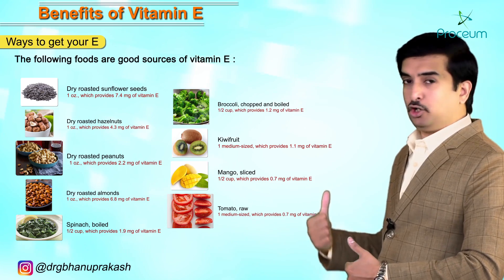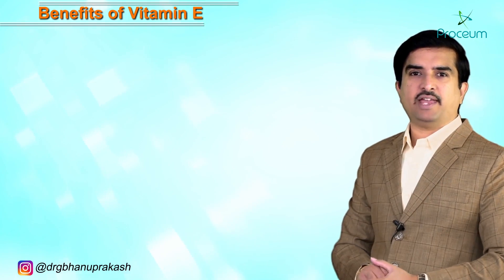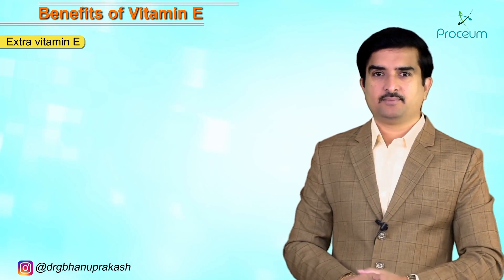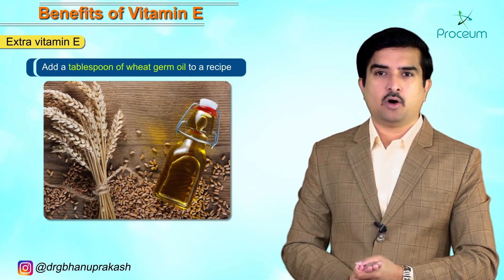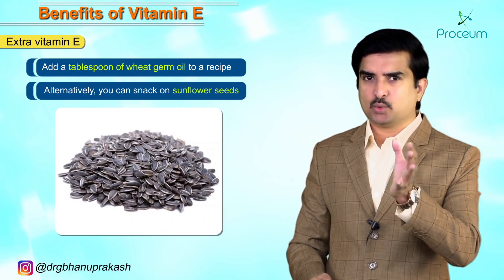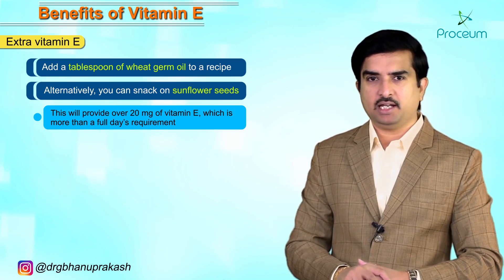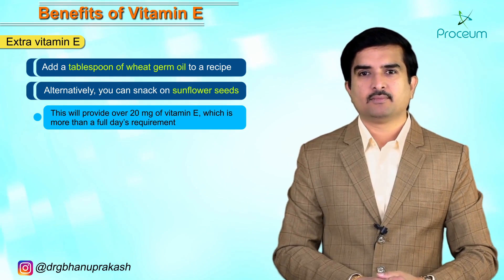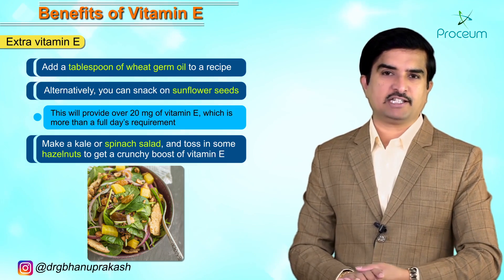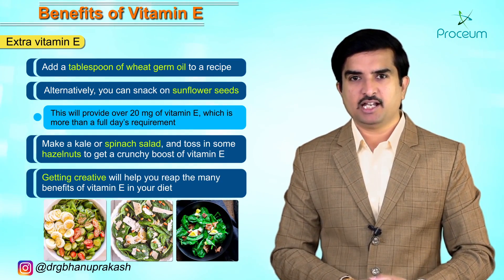You can see a complete list of food sources on screen — pause and read it. One easy way to get enough vitamin E is to add a tablespoon of wheat germ oil to a recipe. You can also snack on sunflower seeds, which provide over approximately 20 milligrams of vitamin E — more than a full day's requirement. Making a spinach salad with hazelnuts also gives a crunchy boost of vitamin E. Getting creative will help you reap many of its benefits.